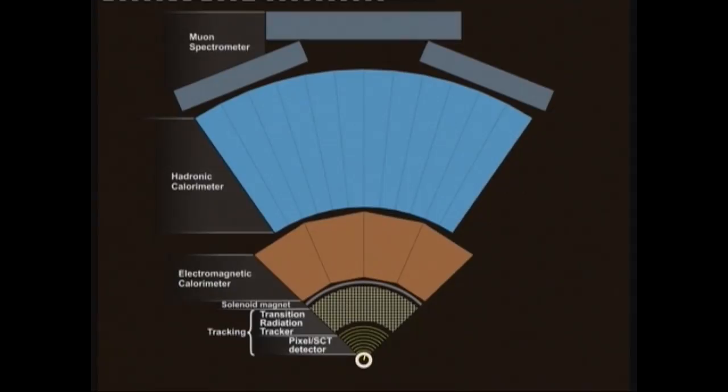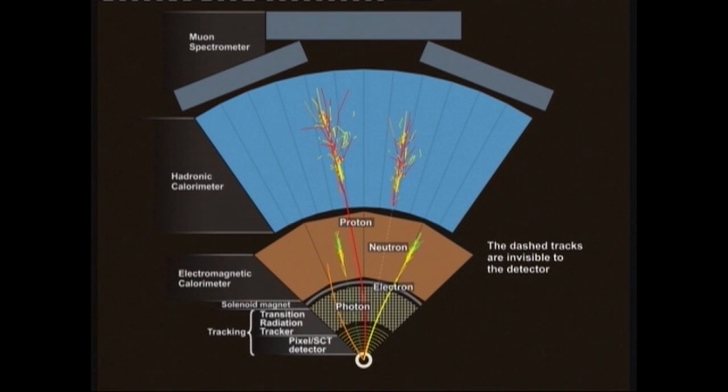And so what we want in the physics analysis is the reconstructed particles, so the energies and directions of the particles coming out of the collision. So we go from this raw data to reconstructed data by running very sophisticated, complicated computer programs over the data in order to try and reconstruct the particles coming out of the collisions. And then this is what people use for doing the final physics analysis.